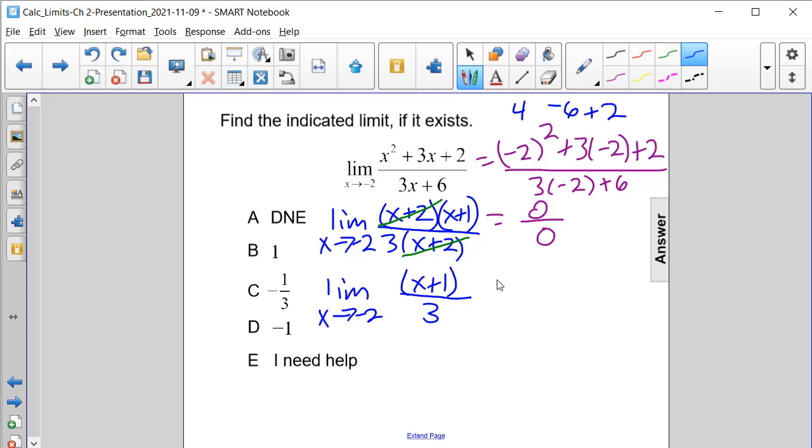So now let's substitute negative 2 in for x. And when we do that, we'll have negative 2 plus 1, which is negative 1 divided by 3. So negative 1 third or answer choice C.